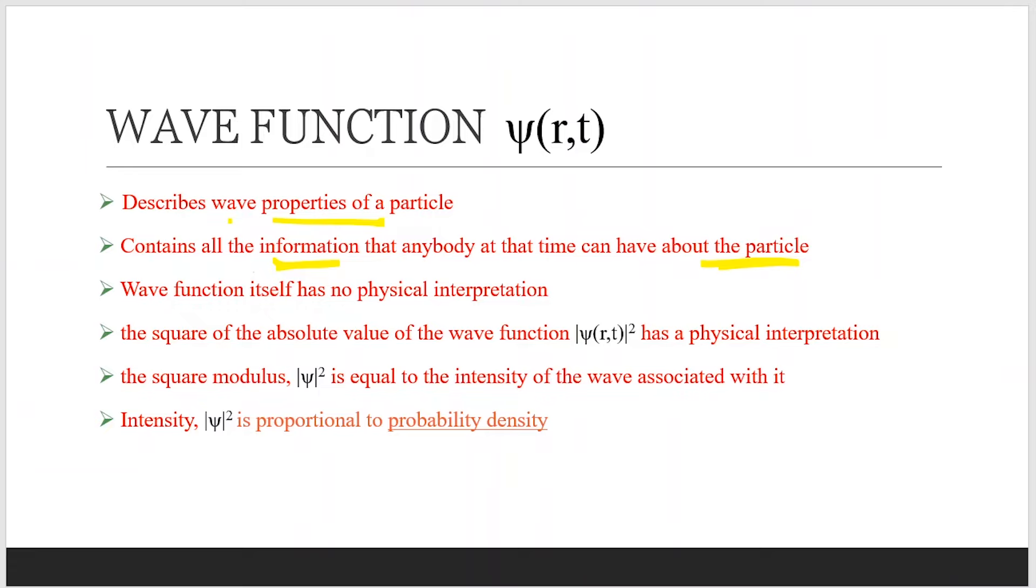But wave function has no physical interpretation. However, its absolute square has a physical interpretation. It is the intensity, which gives us the probability density. These are some basic points.